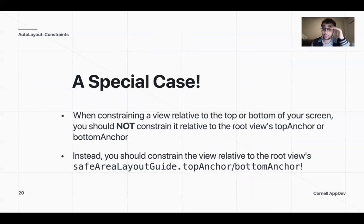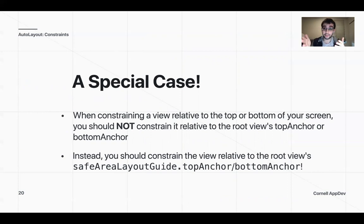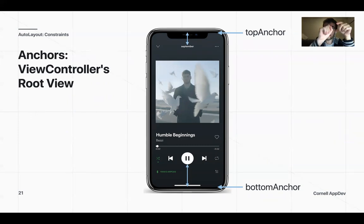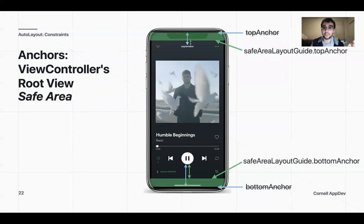One special case with constraints: when you're trying to constrain things to the top or bottom of your screen, you need to be careful because some phones have things in the way. For example, on an iPhone 11, you have that little oval shape and the bar on the bottom. We don't want to start there — we want to use safe area layout guide, which tells us where the top anchor is after all of those things. This is for newer phones; if you have an iPhone 7, there's no widget so you're fine.